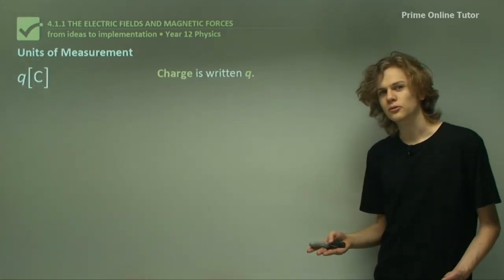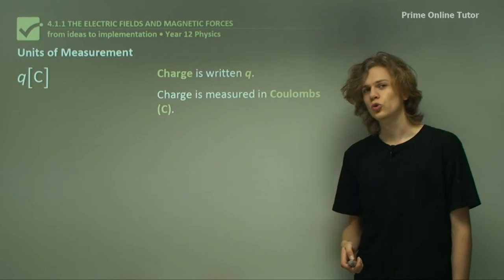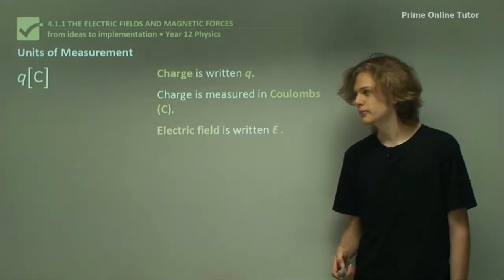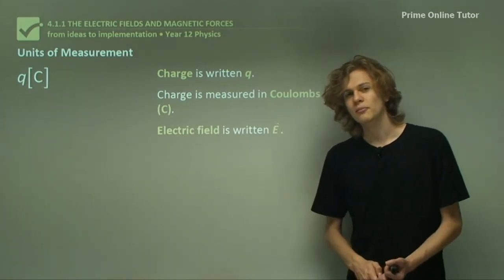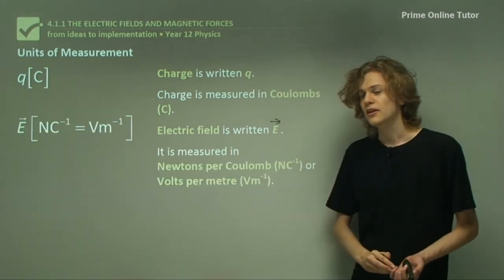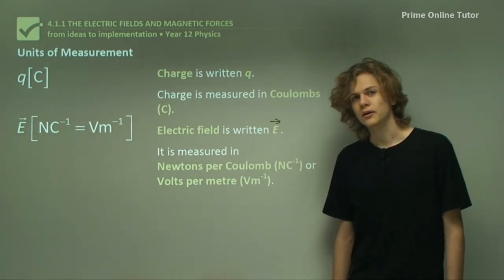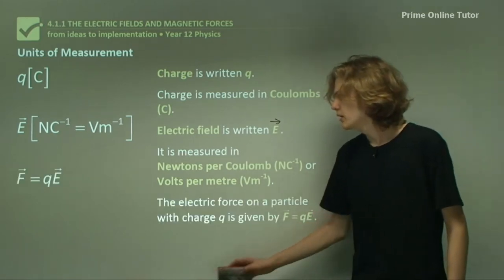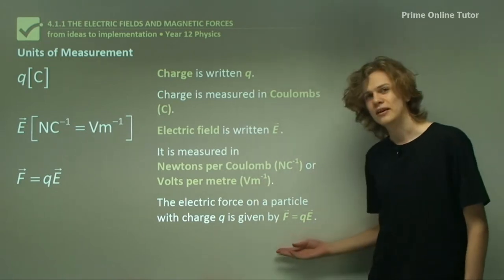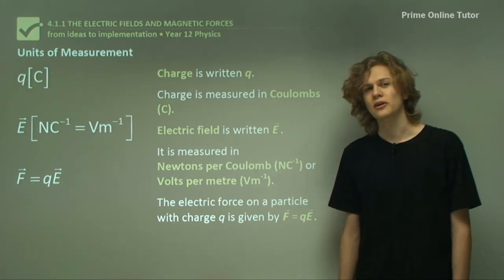So how do we measure the charge of a particle? The charge of a particle in physics is written Q. It is measured in the unit called the Coulomb, which can be positive or negative, depending on the polarity of the particle. Electric field strength is written E. Bear in mind that this is a vector, so it has both direction and magnitude. The intensity of the electric field is measured in newtons per Coulomb, or equivalently, volts per meter. The two terms are interchangeable. The equation governing the force on a particle in an electric field is given by F equals QE, where F is the force on the particle, Q is the particle's charge, and E is the strength of the electric field.